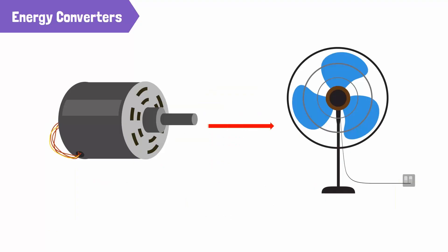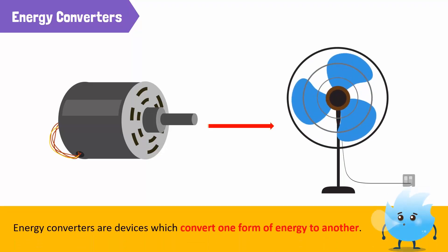But how does energy transform with the help of things like a motor or a fan's blades? The answer is that they are energy converters. They change one form of energy to another.